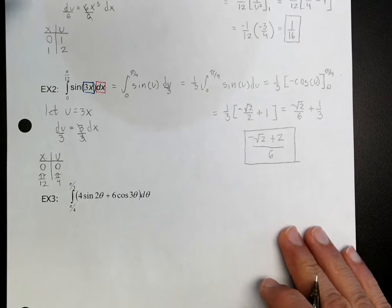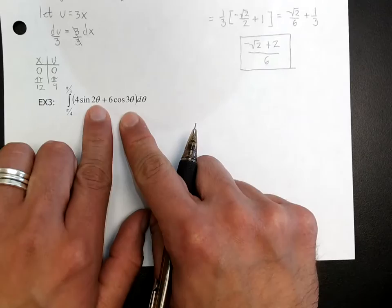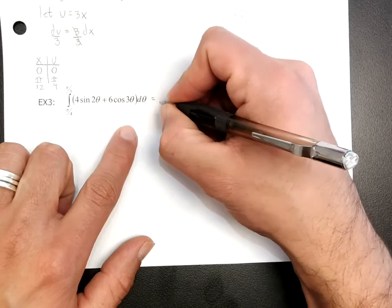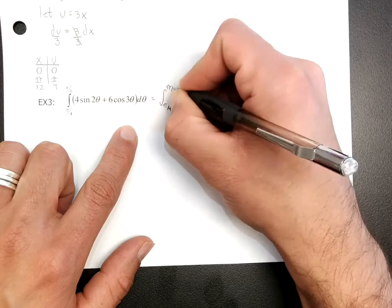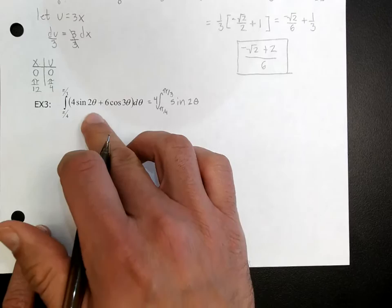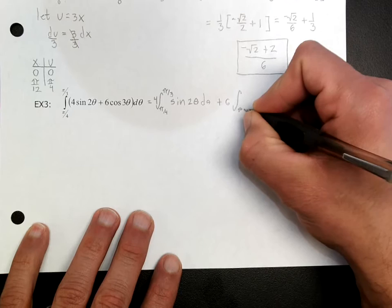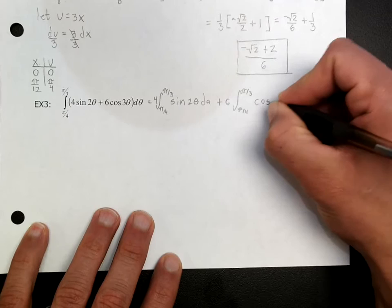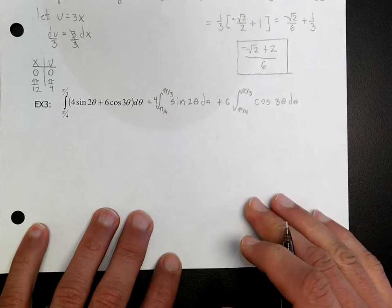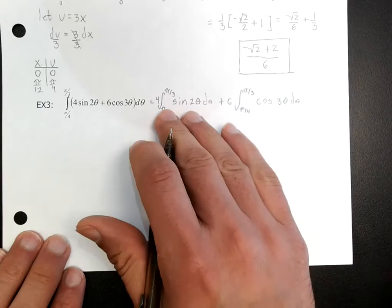Example 3. On this one I actually have two functions, so you want to look to see if you can make this easier by splitting the integral into two different functions. So we have the integral from pi over 4 to pi over 3, split into: 4 sine(2 theta) d theta plus 6 times the integral from pi over 4 to pi over 3 of cosine(3 theta) d theta. Now I have to use two substitutions, treating these as two different problems.